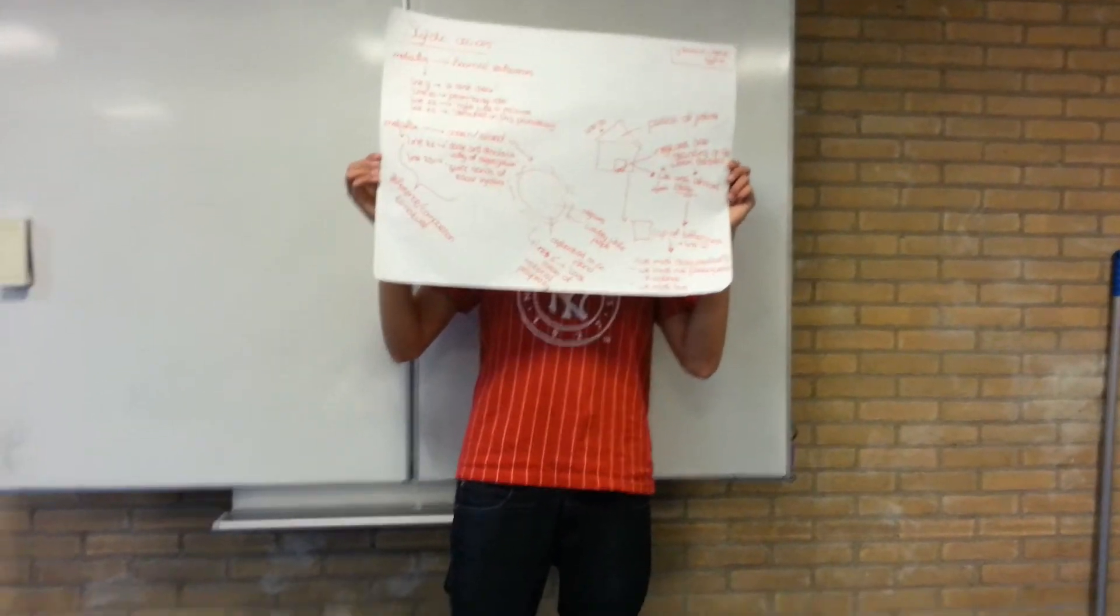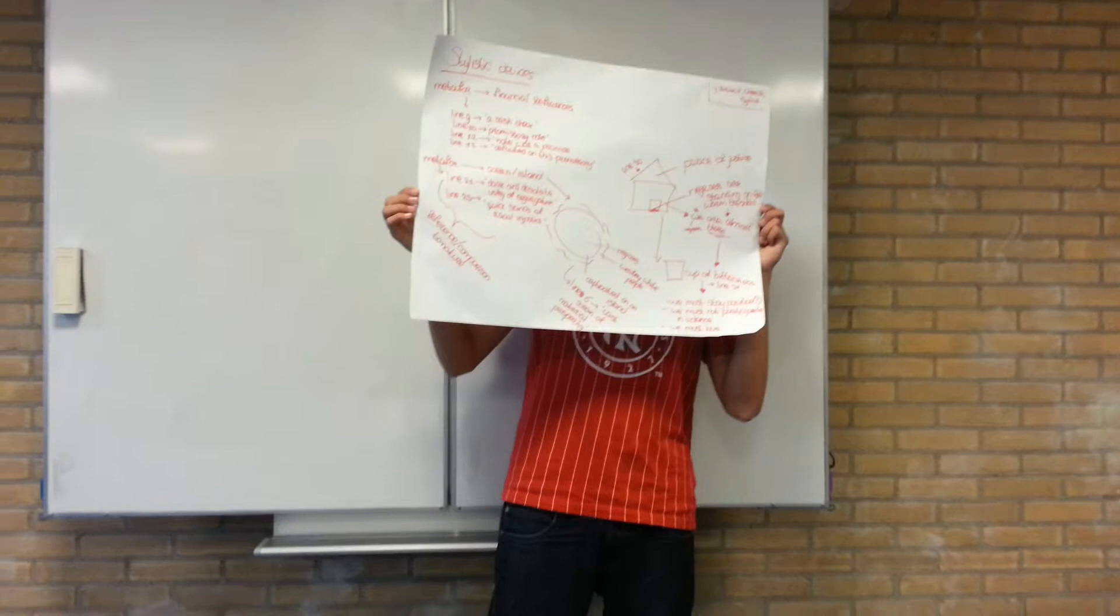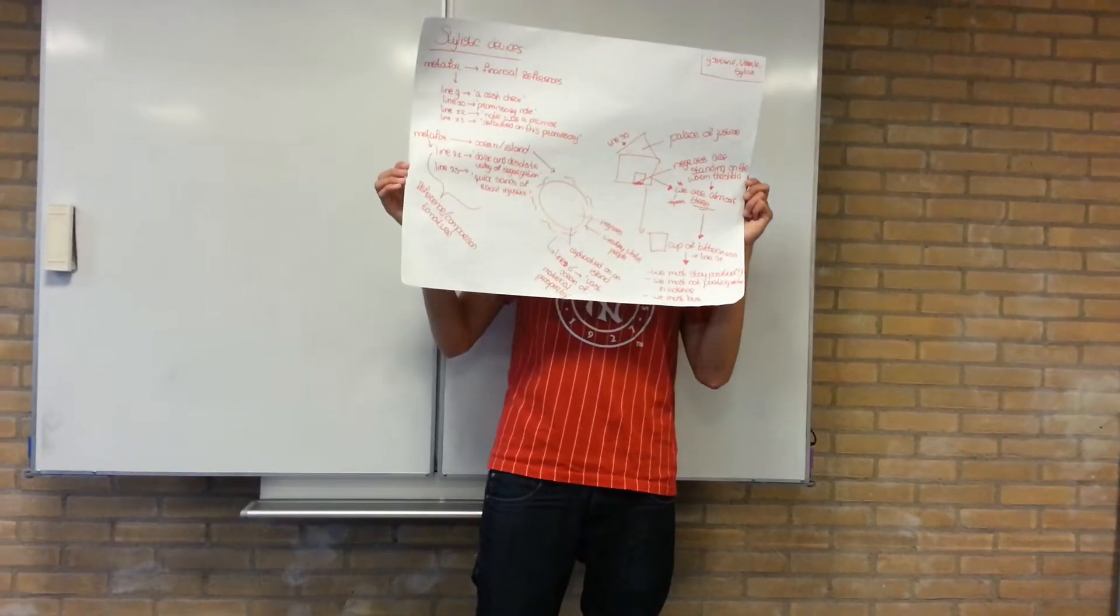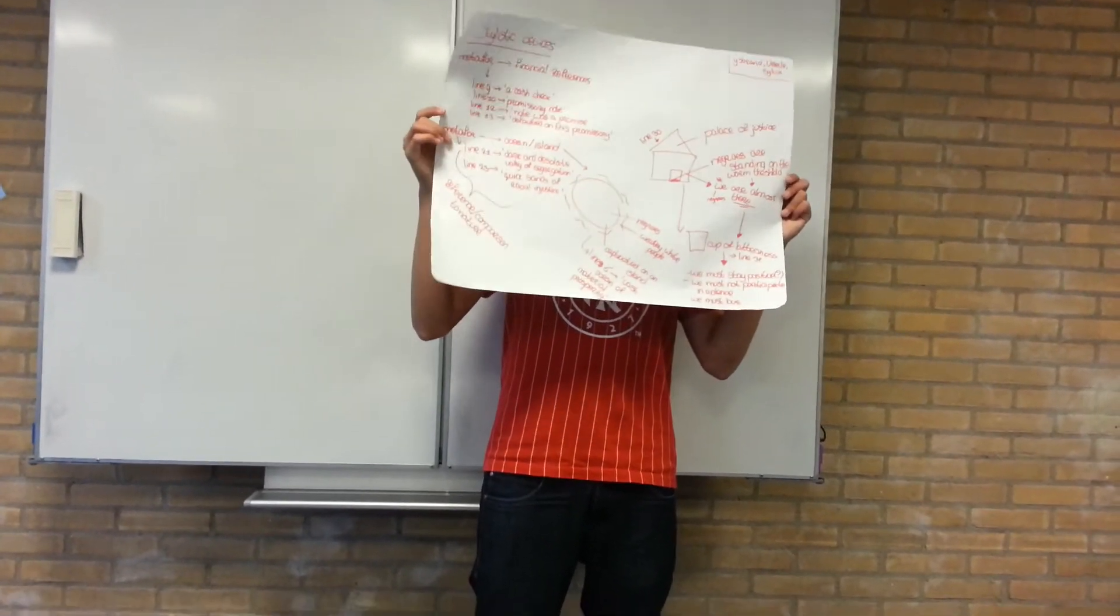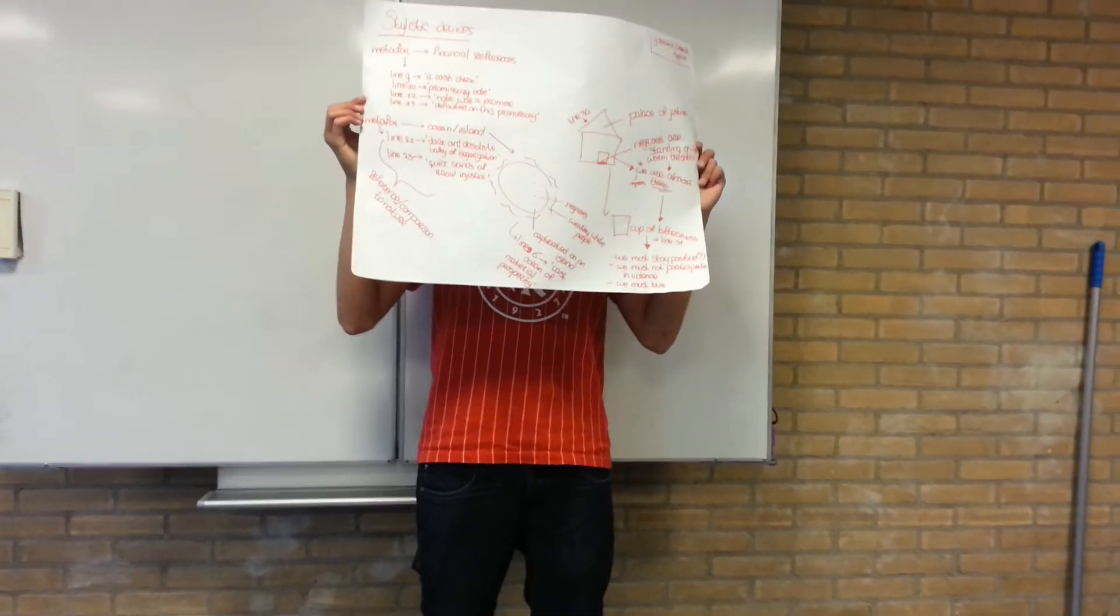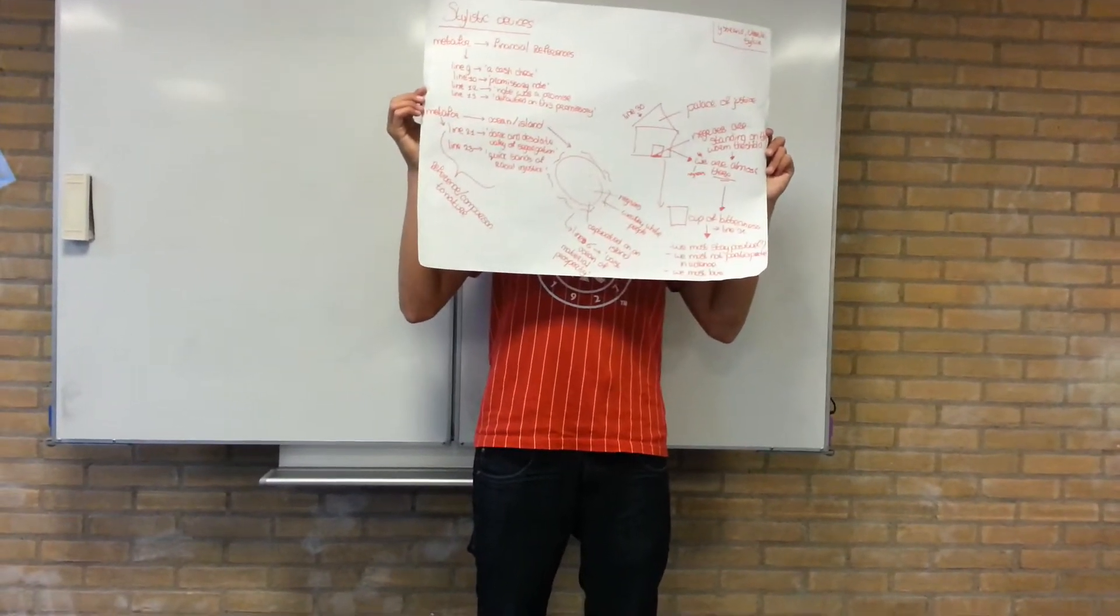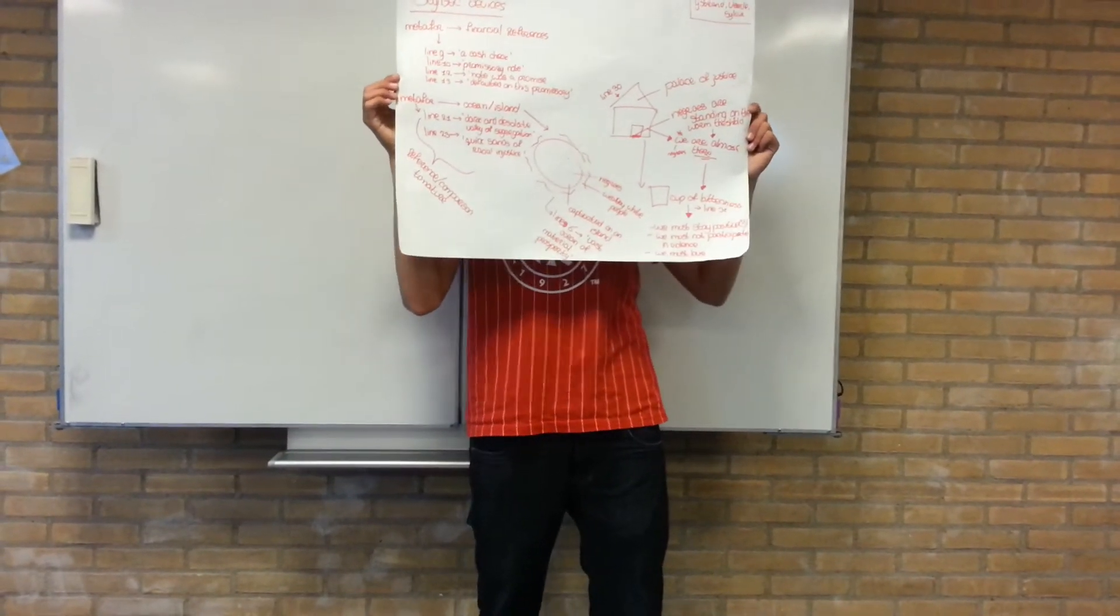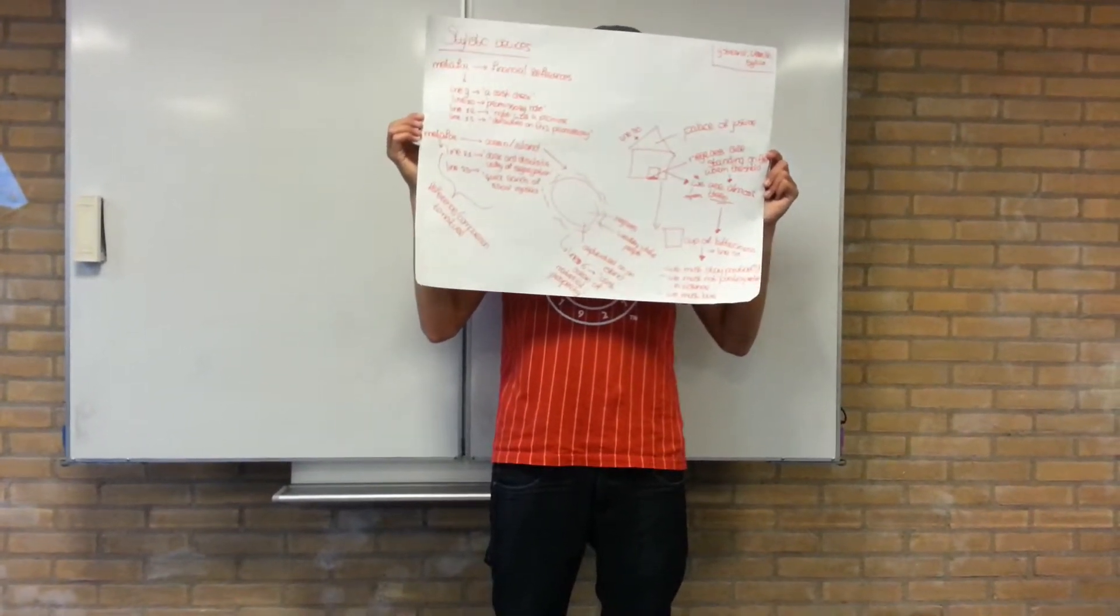And then there are a few metaphors. He makes a lot of financial references. For example, in line 9 he says cash check. In line 10 he says promissory note. In line 12 he says note. He made the financial references because it says something about how it's changing. Because when you talk about the banks, you cash your checks. We need to do something and get something back. We need to give it to all the other people so we can get something back, which is our freedom.